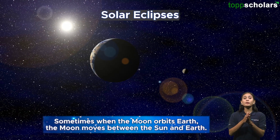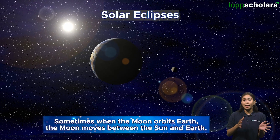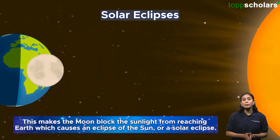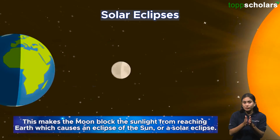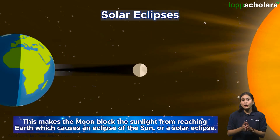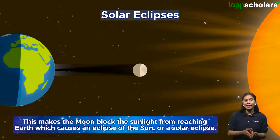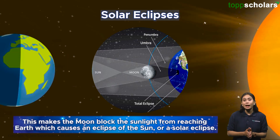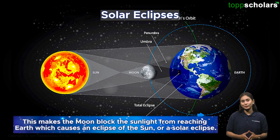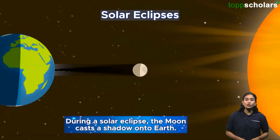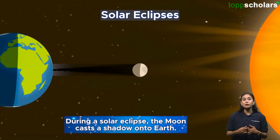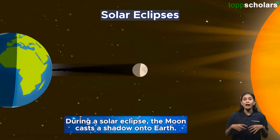Now let's learn about solar eclipses. Sometimes the moon moves between the Sun and the Earth, blocking sunlight from reaching the Earth. This causes an eclipse of the Sun, or a solar eclipse. During a solar eclipse, the moon casts a shadow onto Earth.